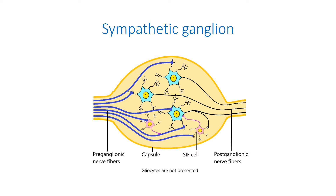Besides efferent postganglionic neurons, sympathetic ganglia contain interneurons that exhibit catecholamine fluorescence and are called small, intensely fluorescent cells. These cells receive preganglionic cholinergic fibers and may modulate ganglionic transmission. In some ganglia, they receive collaterals from postganglionic axons and may serve integrative functions. The neurotransmitter of these cells is dopamine.